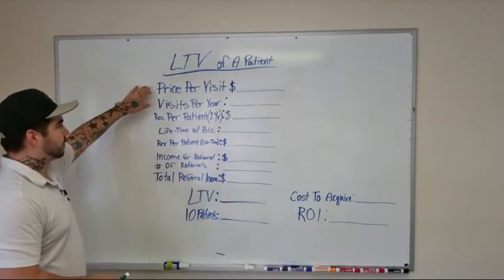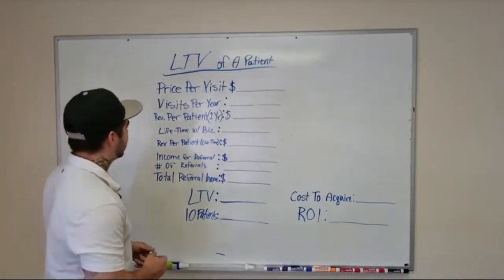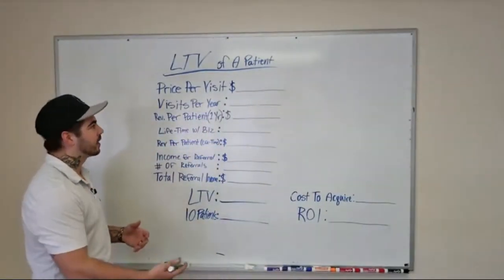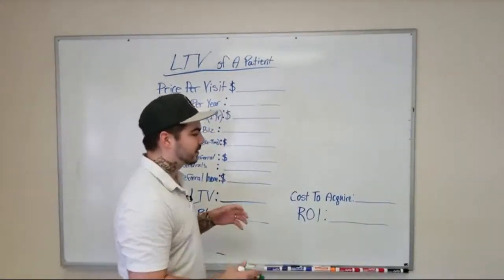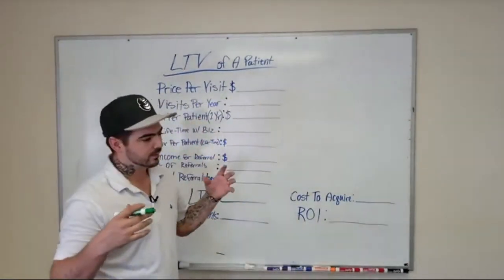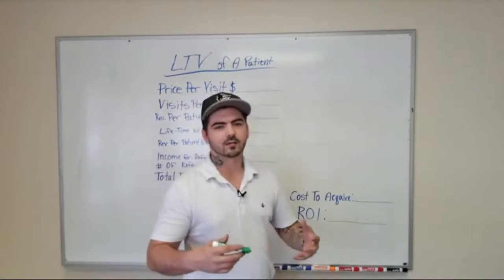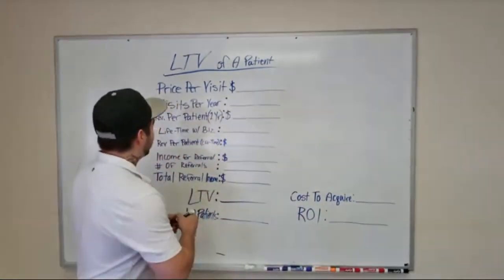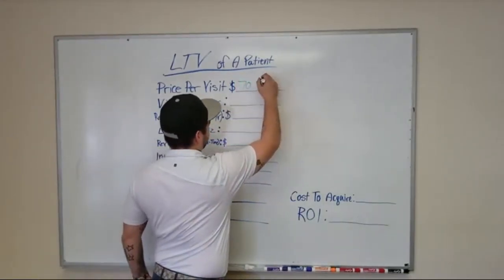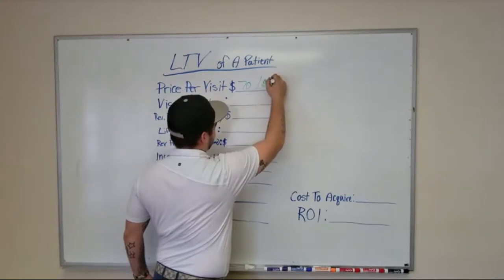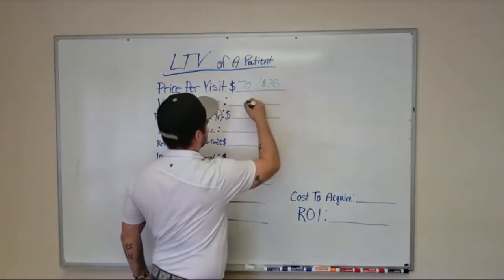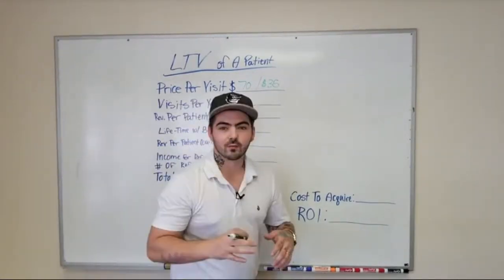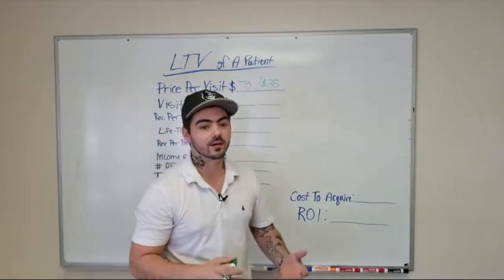So, price per visit. I'm going to use myself as an example, going to my own chiropractor, so you can get a real-life example of what I'm worth to his practice. The first visit was $70, and every visit after that is $35. I go anywhere from 6 to 12 times a year — it really just depends on whether I can make it in there or not.